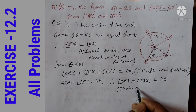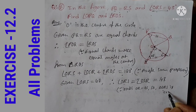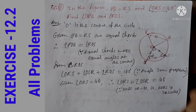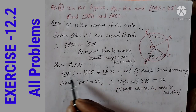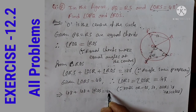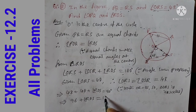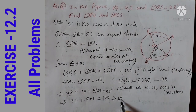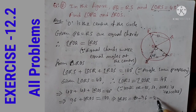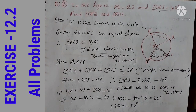Since OR and OS are radii, OR is equal to OS, so triangle ORS is an isosceles triangle. In an isosceles triangle, equal sides have opposite angles equal. So angle ORS equals angle OSR equals 48 degrees. Therefore: 48 plus 48 plus angle ROS equals 180 degrees, so 96 plus angle ROS equals 180, giving angle ROS equals 84 degrees.